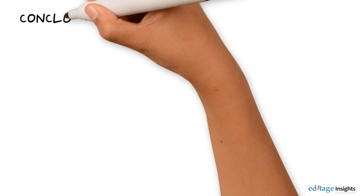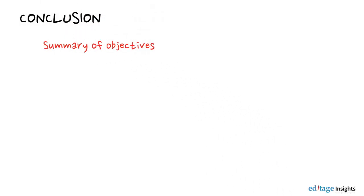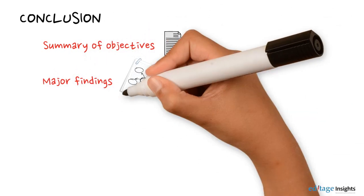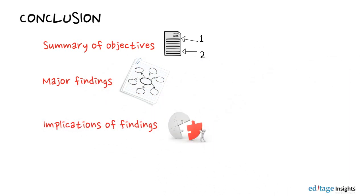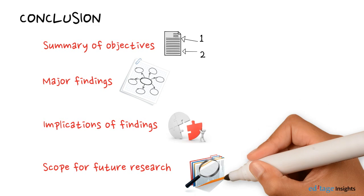And finally, in the conclusion, you must tie it all in together, sum up the objectives of your paper, list your major findings, share the implications of the study findings, and mention the scope of further research on the same topic.